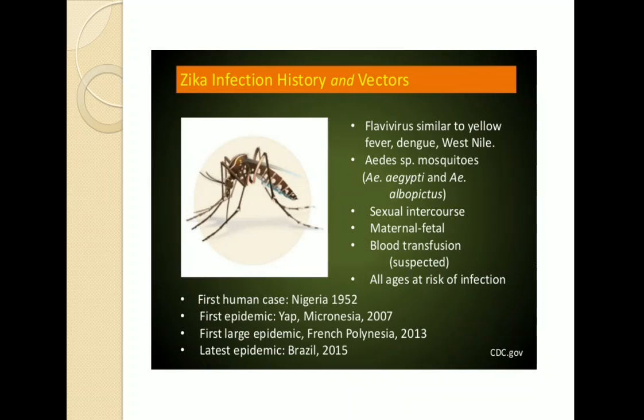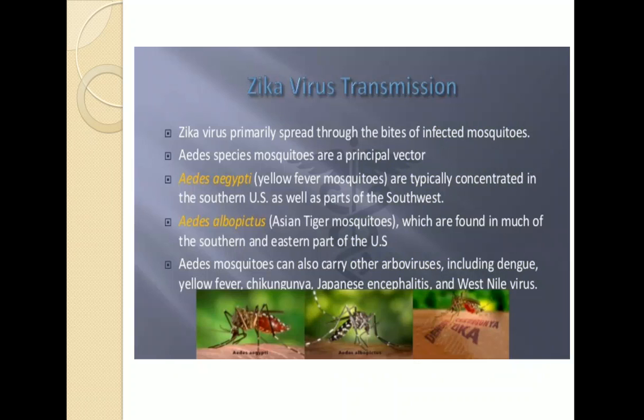People of all age groups are at risk. Zika virus primarily spreads through the bite of infected Aedes species mosquitoes, which are the principal vector. Aedes mosquitoes can also carry other arboviruses including dengue, yellow fever, chikungunya, Japanese encephalitis, and West Nile virus.